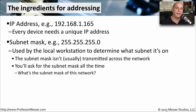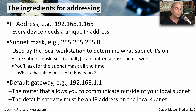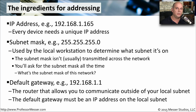If you're going to be communicating to devices on the internet, or even just outside of your local network, you're also going to need a default gateway. This is going to be the IP address associated with the router that's on your local network. You will not be able to communicate outside of your local network unless you have assigned a default gateway.